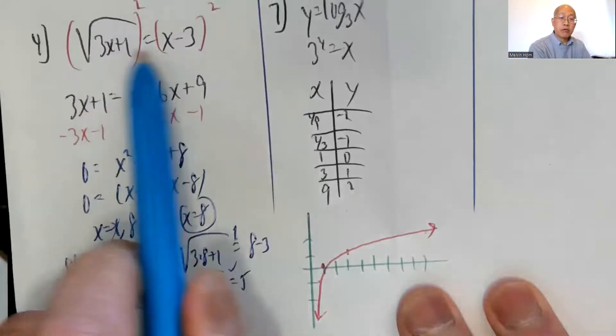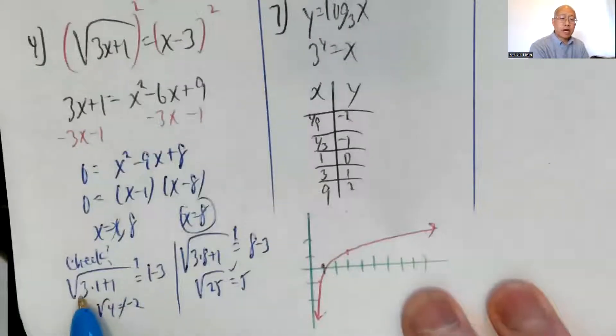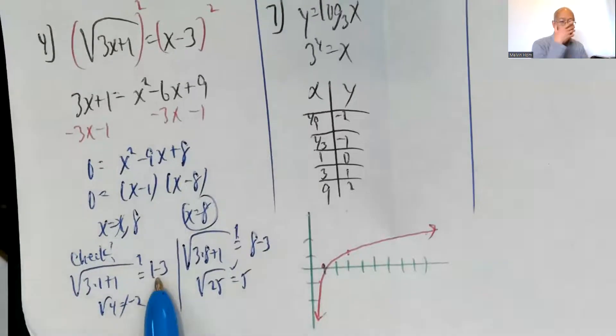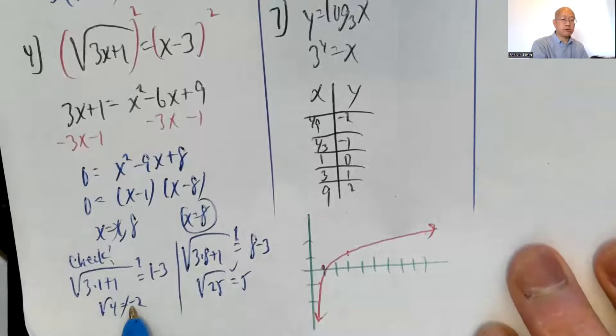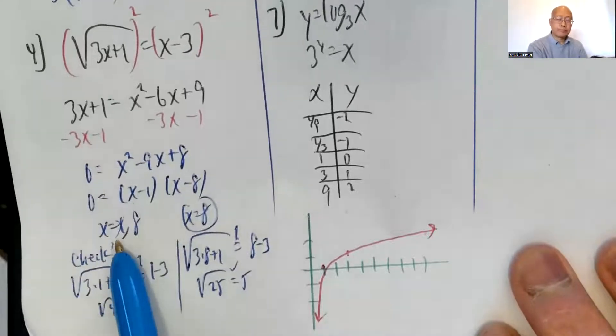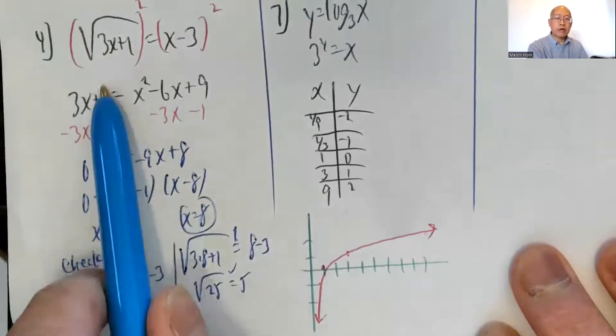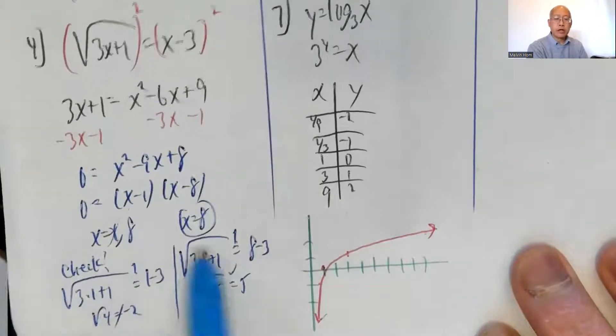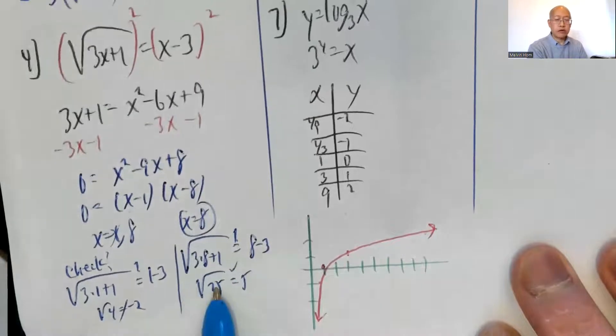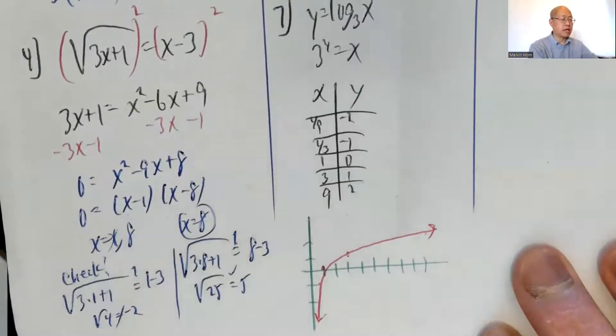Plug in a 1 here and a 1 here. The square root of 3 times 1 plus 1 is not the same as 1 minus 3, because that will give me the square root of 4 is negative 2, and that's not a true statement. So I throw out 1. 8 works okay. 3 times 8 plus 1, square root, does equal 8 minus 3, because the square root of 25 is equal to 5. So the only real solution is x equals 8.